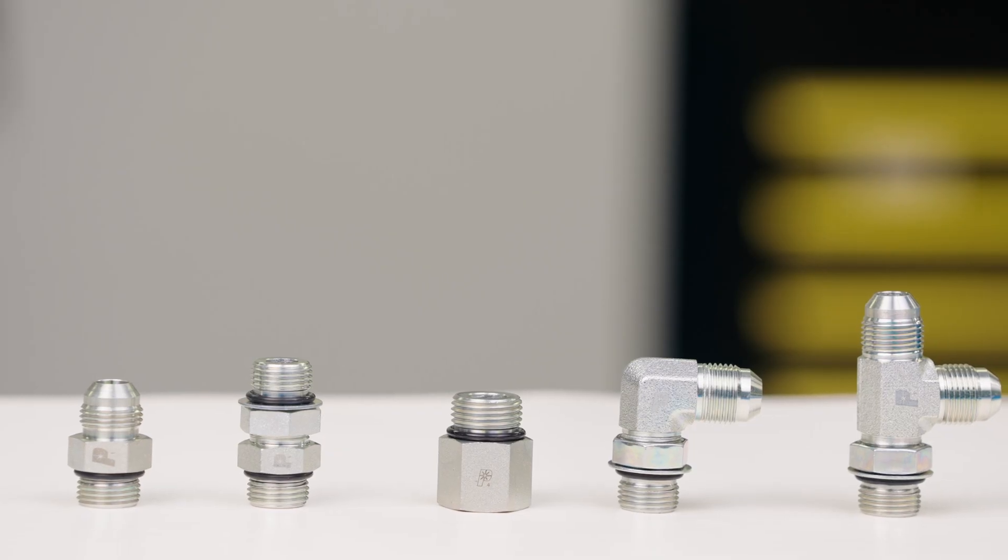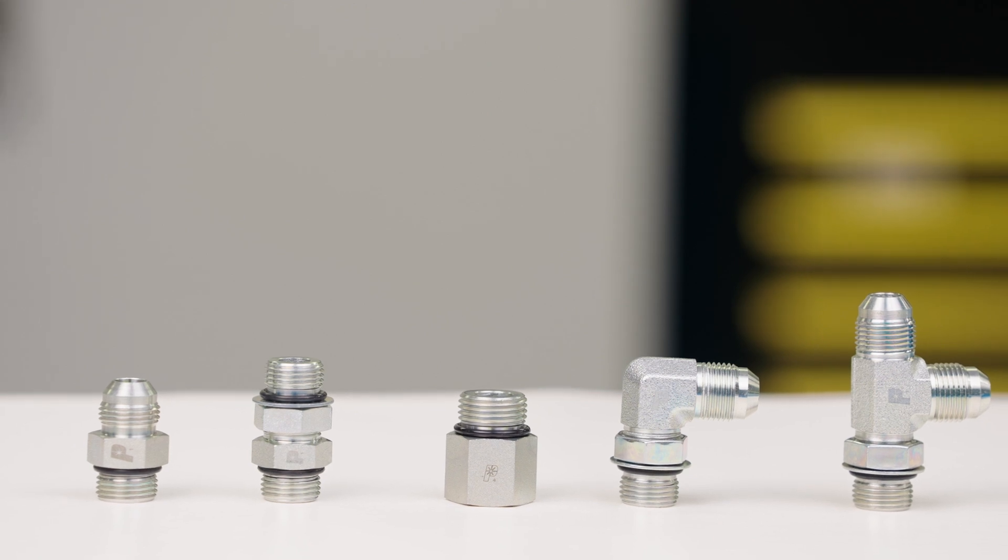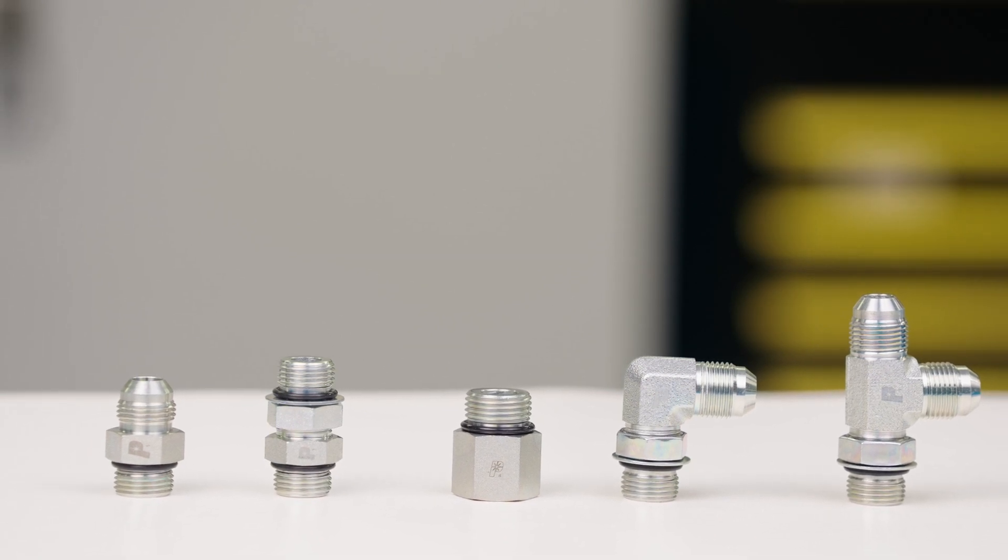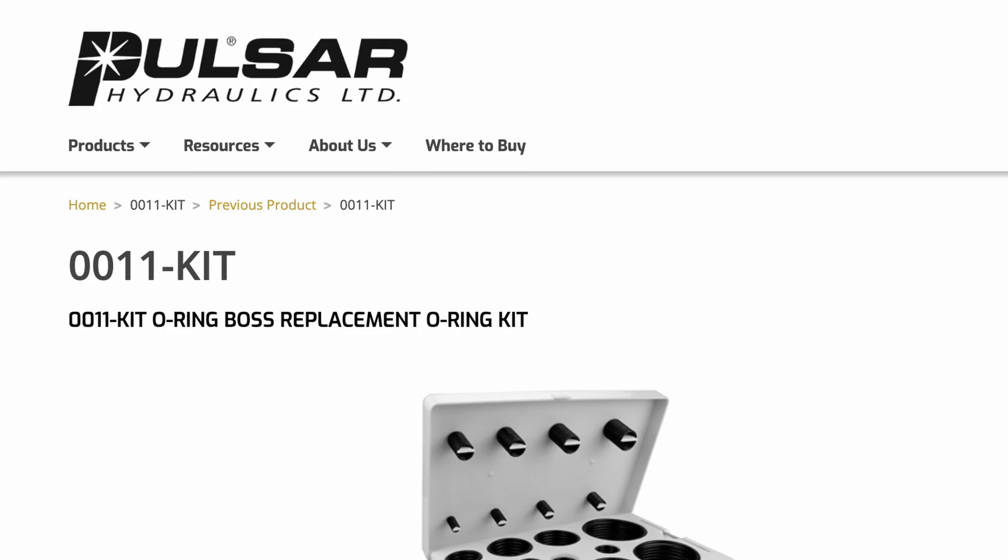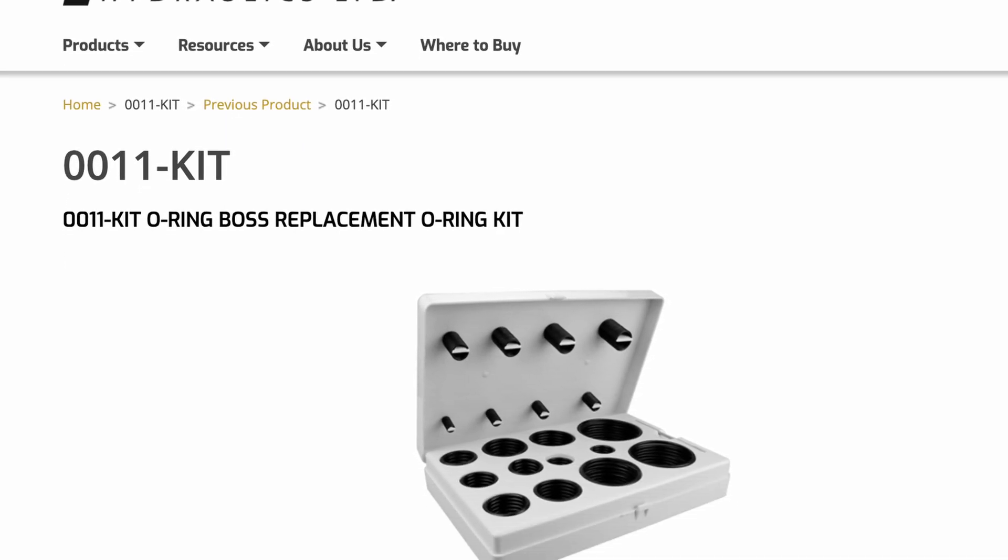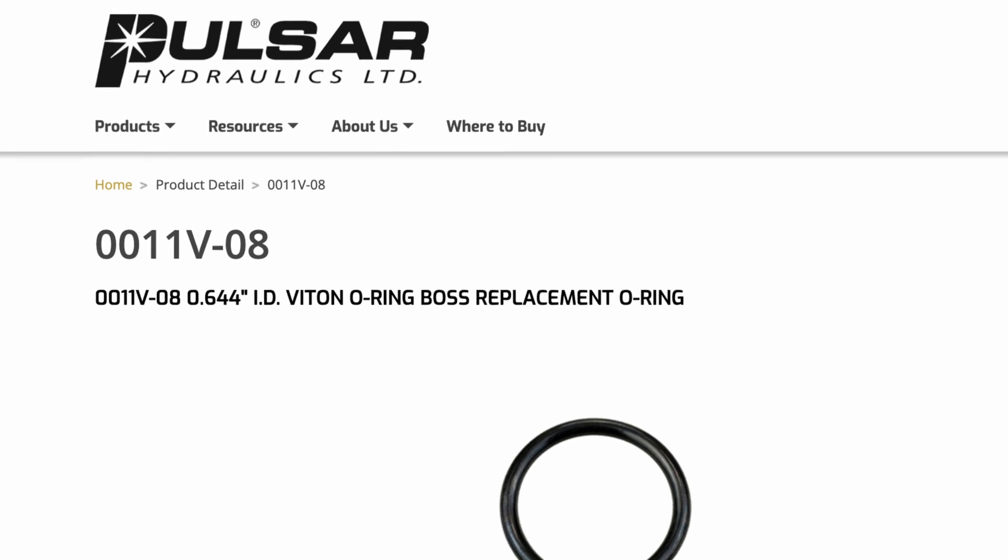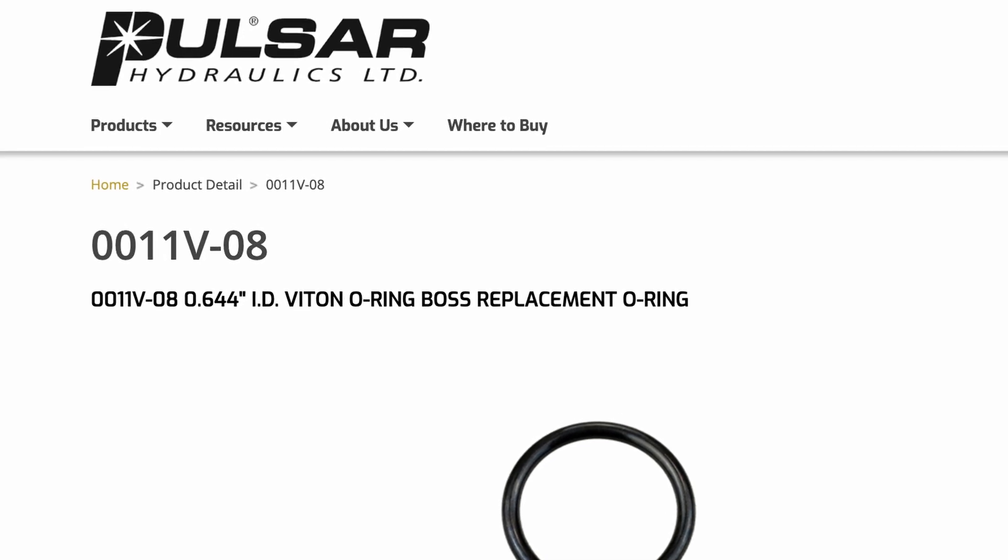Pulsar O-Ring Boss fittings, also referred to as ORB fittings, come in a wide variety of sizes, shapes, and combinations and are available in zinc-plated carbon steel or type 316 stainless steel and use 90-durometer nitrile rubber O-Rings. 90-durometer VITON rubber replacement O-Rings are also available.